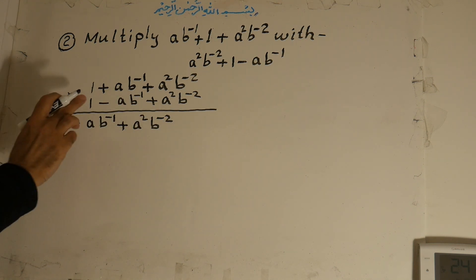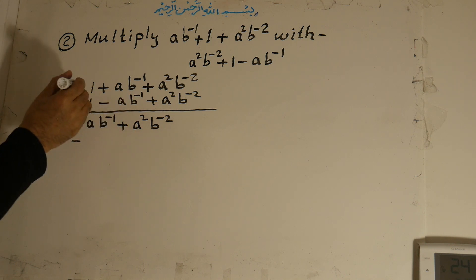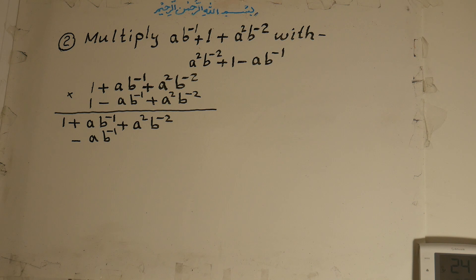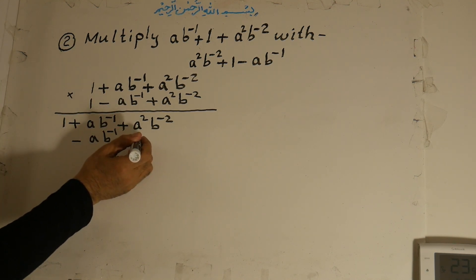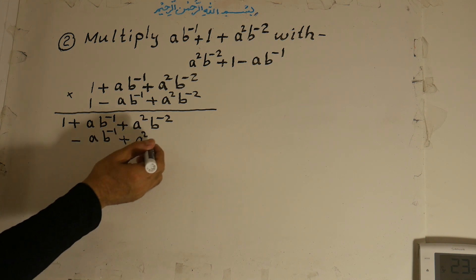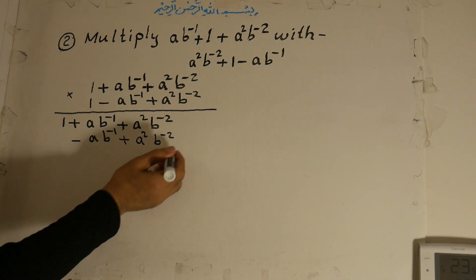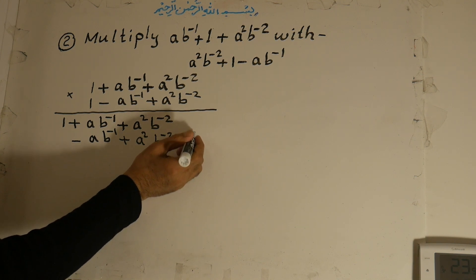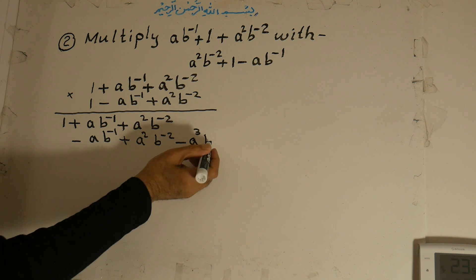Now we multiply the second term. Negative times positive is negative — ab to the power of minus 1 times 1 is ab to the power of minus 1. Negative times negative is positive — a times a is a to the power of 2, and b to the power of negative 1 times b to the power of negative 1 — we add the powers — is b to the power of negative 2. And negative times positive is negative — a to the power of 3, b to the power of negative 3.